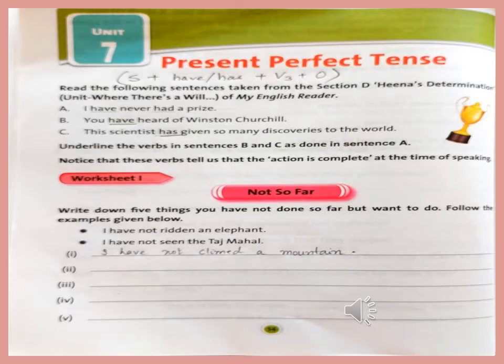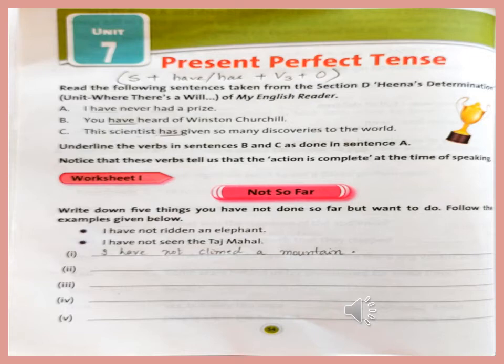Dear students, let us read the following sentences taken from section B of Hina's Determination unit, 'Where There Is a Will,' of my English reader. Sentence A: I have never had a prize. Sentence B: You have heard of Winston Churchill. Sentence C: This scientist has given so many discoveries to the world. Underline the words in sentences B and C as done in sentence A. Notice that words like 'have' or 'has' tell us that the action is completed at the time of speaking.